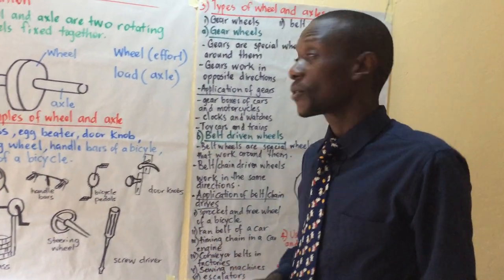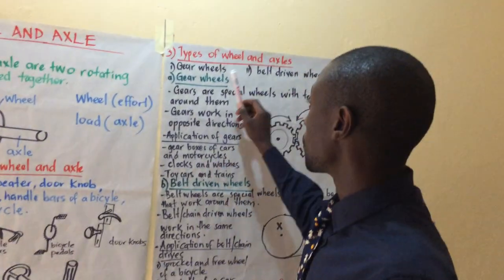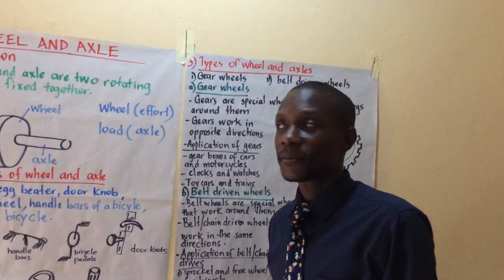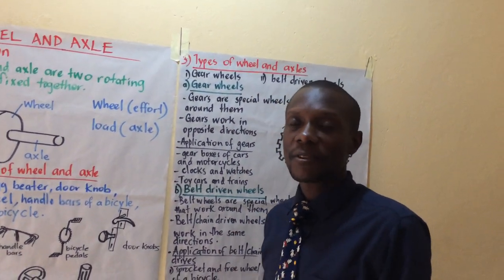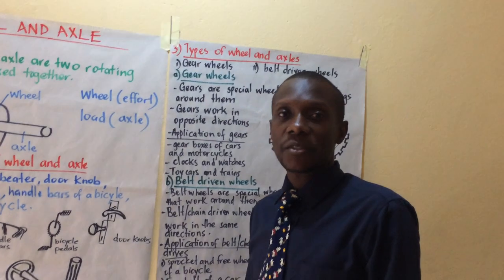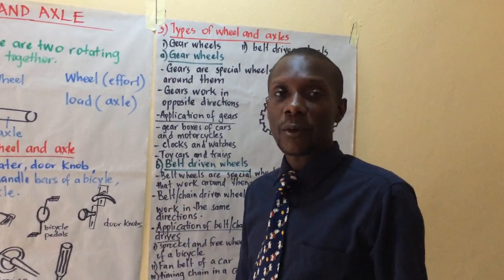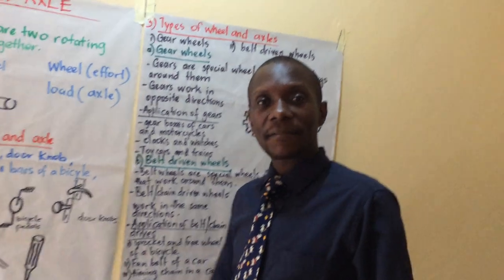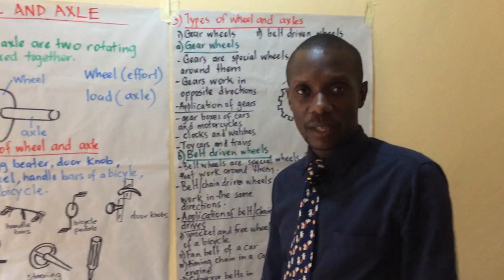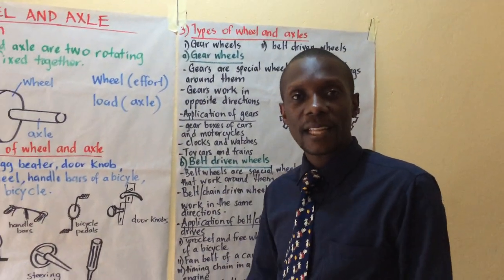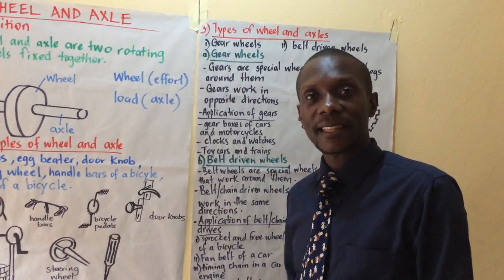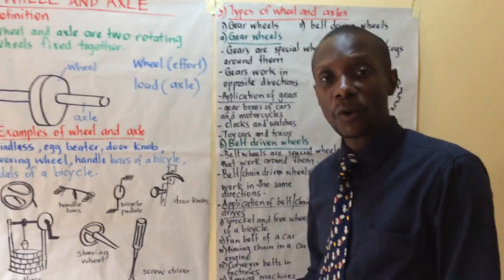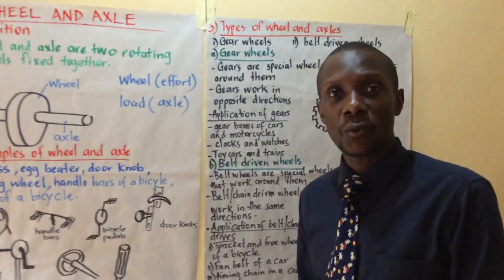The types of wheel and axle: we have two — gear wheels and belt driven wheels. We need to define what gear wheels are. Gear wheels are special wheels that have teeth around them — or you could say they have cogs around them. In fact, some people call gear wheels cog wheels.